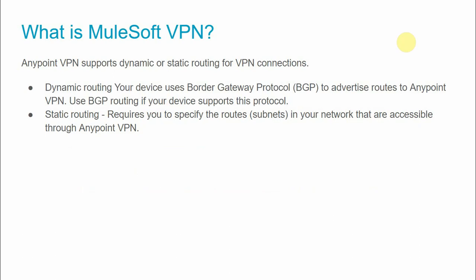MuleSoft VPN supports two kinds of routing: dynamic routing and static routing. In dynamic routing, if your VPN device supports the BGP protocol (Border Gateway Protocol), you can use that. If your VPN device does not support dynamic routing, you use static routing. In static routing you must provide the CIDR ranges — the subnets that need to be accessible through your Anypoint VPN. For example, if your MSSQL database or backend services exist on a particular subnet, you configure those subnets in the Anypoint VPN, allowing CloudHub to connect to the on-premise data center.